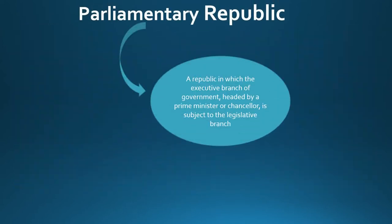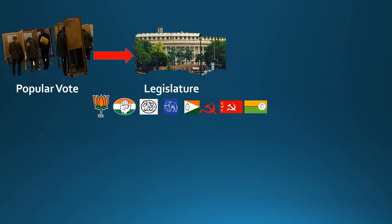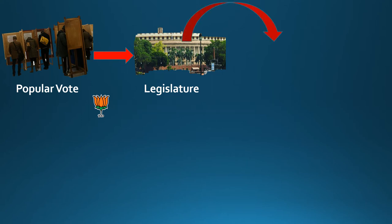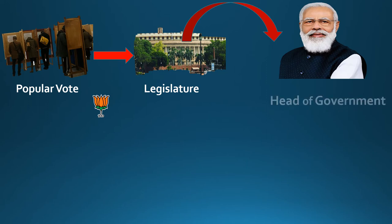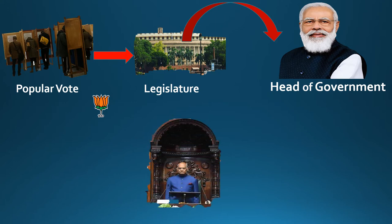A parliamentary republic is a republic in which the executive branch, headed by a prime minister or chancellor, is subject to the legislative branch. Members of the legislature are elected directly by the people, and the leader of the party gaining a majority of seats becomes prime minister. The prime minister is the head of government and generally the most powerful person. Parliamentary republics also usually have a separate head of state, generally called a president, who serves a ceremonial role with little to no actual power in governance, elected directly by the people or with legislative involvement.